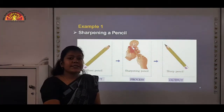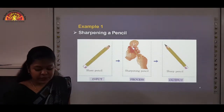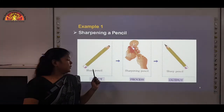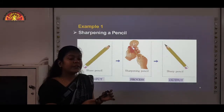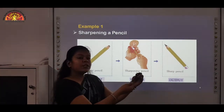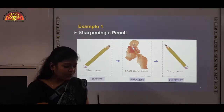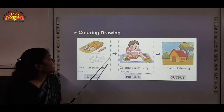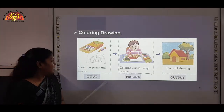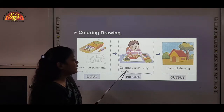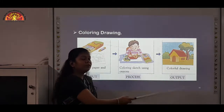Let us understand by some examples. Example 1: sharpening a pencil. For this example, we require a blunt pencil which acts as input. We sharpen this blunt pencil using a sharpener, which acts as process. We get a sharpened pencil, which is the output. Example 2: colouring a drawing. For colouring, we require a sketch on paper and crayons, which act as inputs. Then colouring the sketch using crayons acts as process. After processing, we get a colourful drawing as output.